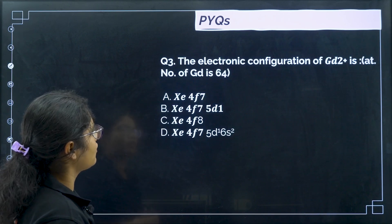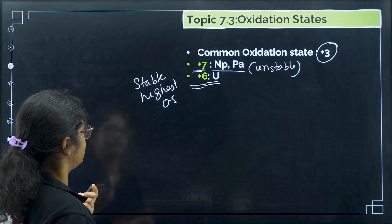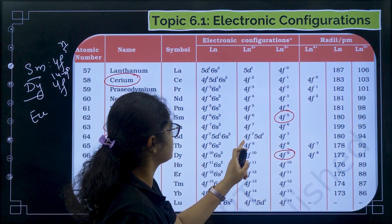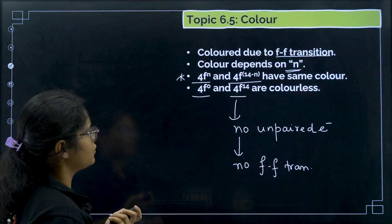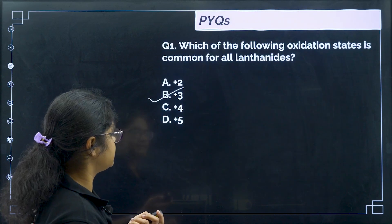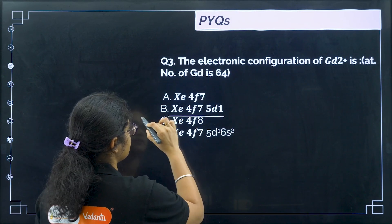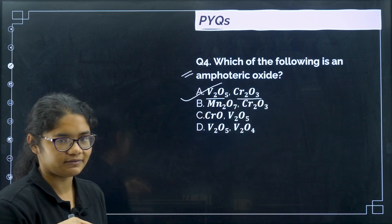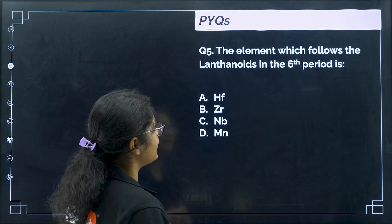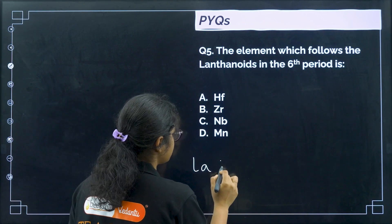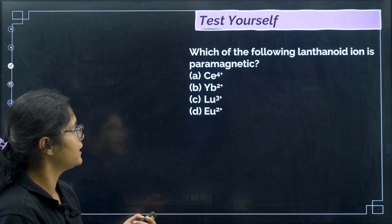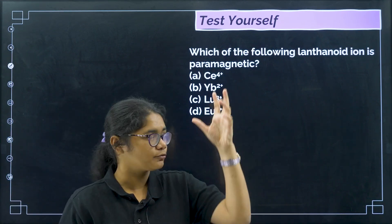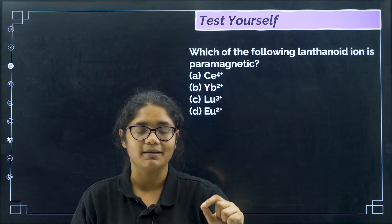Next question — the electronic configuration of Gd²⁺: Gadolinium's configuration gives Gd²⁺ as 4f⁷ 5d¹. Correct answer: option B. Next — which of the following is an amphoteric oxide? V₂O₅ and Cr₂O₃ — covered in the previous class. Next — the element which follows lanthanoids in the sixth period: the answer is hafnium, so option A. Finally, a practice question for you: which of the following lanthanide ions are paramagnetic? Check their electronic configurations to determine unpaired electrons.